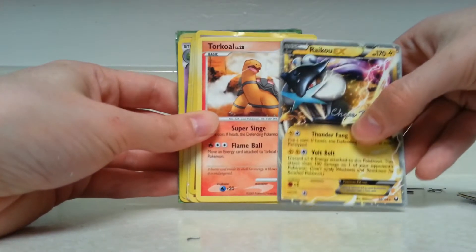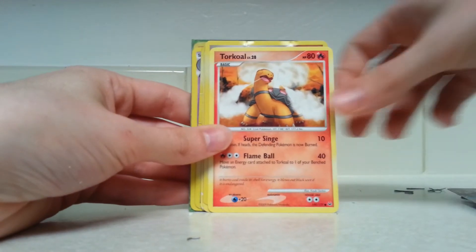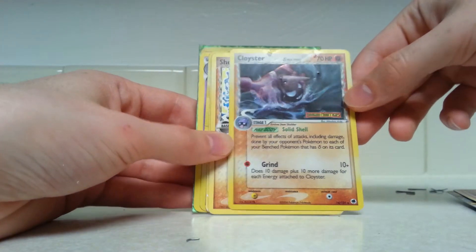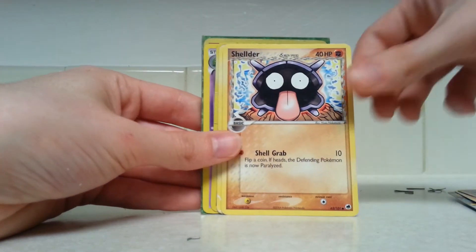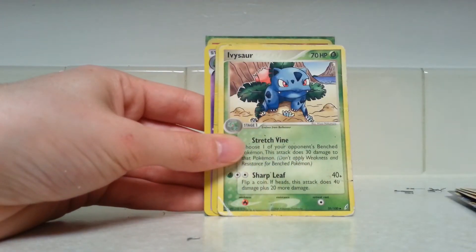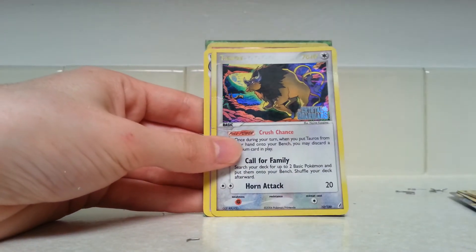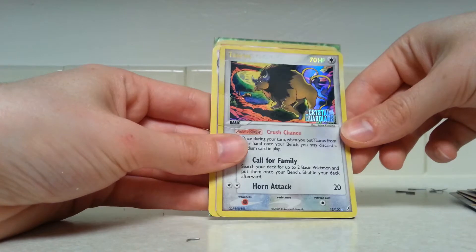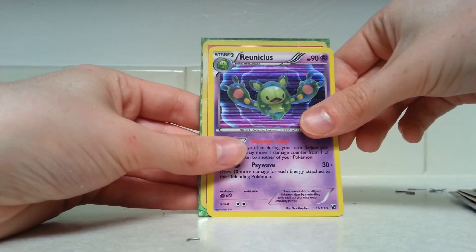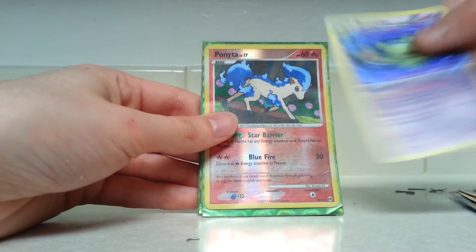We have Torkoal, Cloyster from Dragon Frontiers reverse holo. We have Shellder, we have Wooper, we have Ivysaur. Taros Crystal Guardians, very nice. There is Rionuculus, I think that's how you spell it.